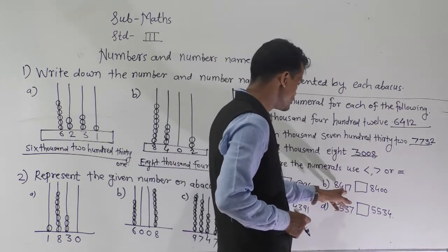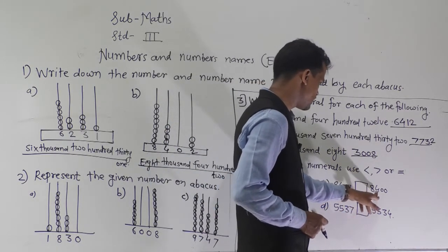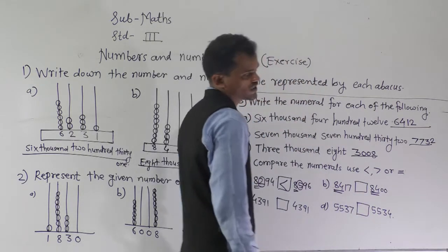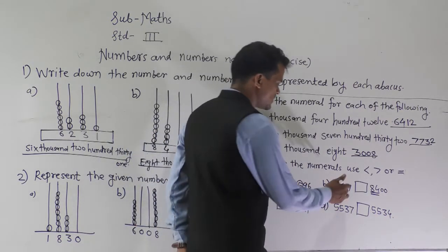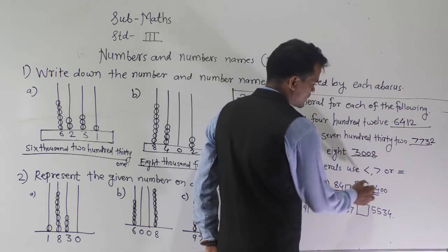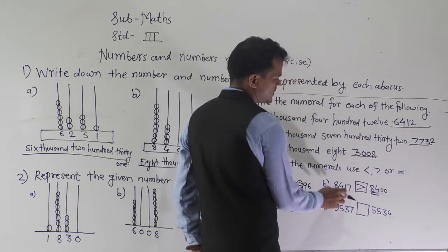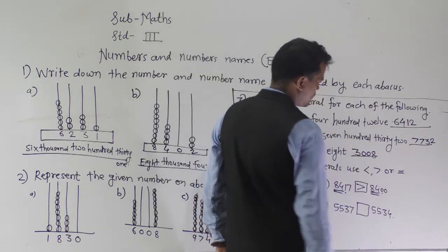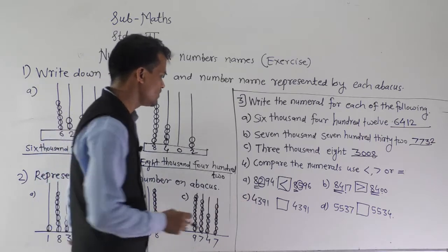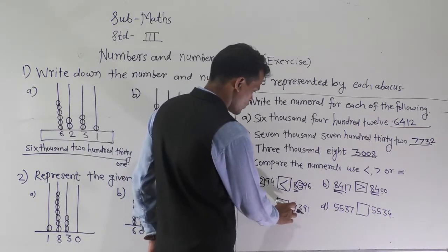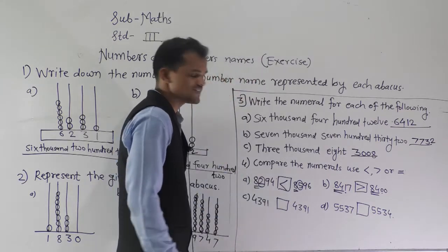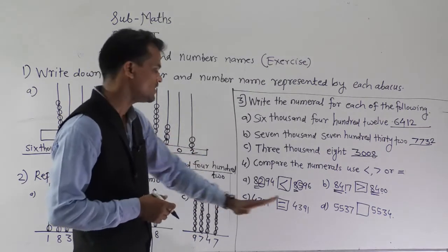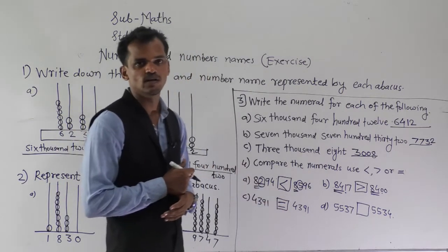Compare 8417 and 8400. The thousands place and hundreds place digits are the same, so compare the tens place digits: 1 and 0. Since 1 is greater than 0, 8417 is greater than 8400. Then compare 4391 and 4391 — both numbers are the same, so use the equal to sign.